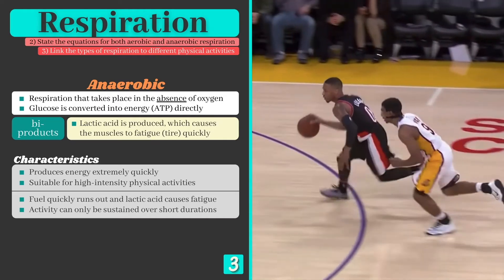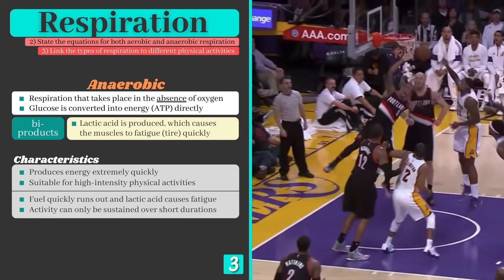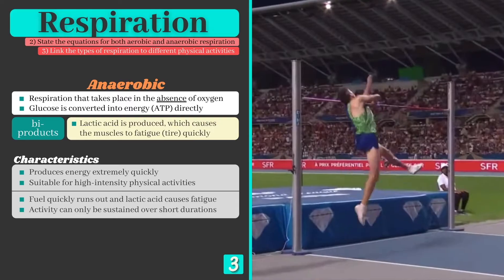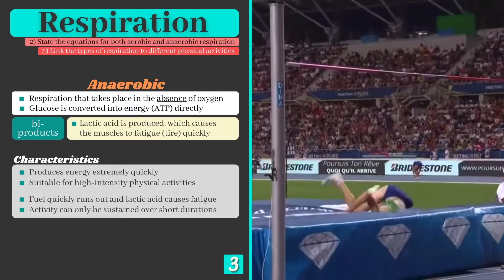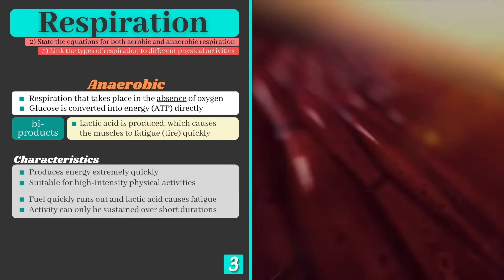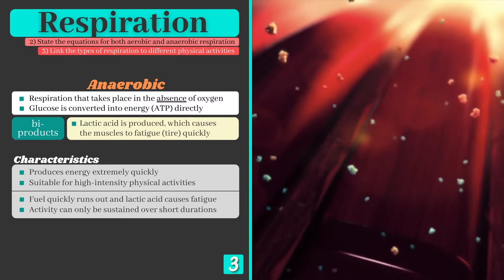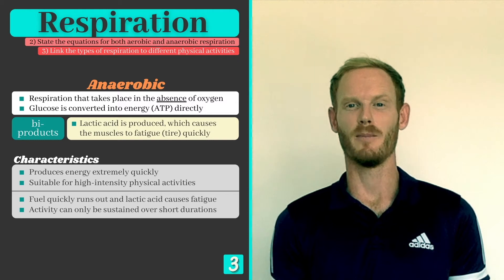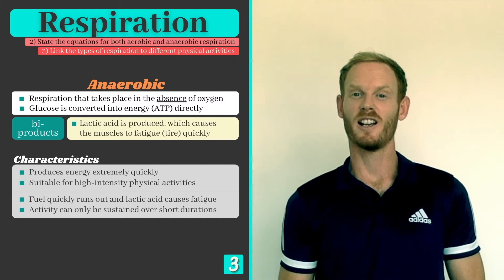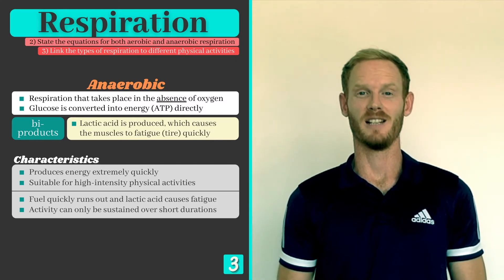This enables us to produce lots of force required for actions such as driving to the hoop in basketball or performing an explosive movement such as the high jump. Anaerobic respiration does come with a downside however, as lactic acid affects the functioning of the muscles over time, leading to fatigue or tiredness and limiting the amount of force that you're able to produce. This means that high intensity work cannot be sustained for long, hence why you can't run a marathon at 100 meter pace.